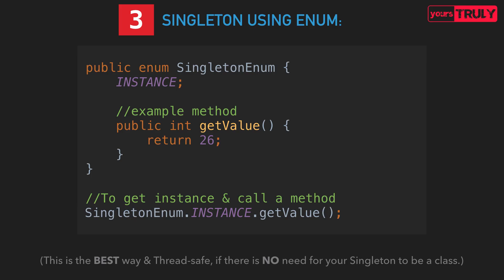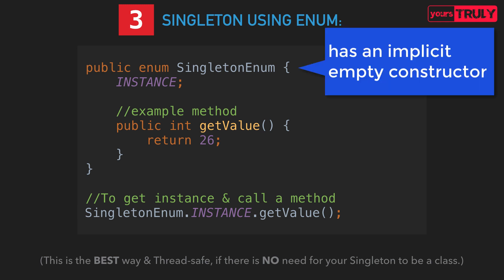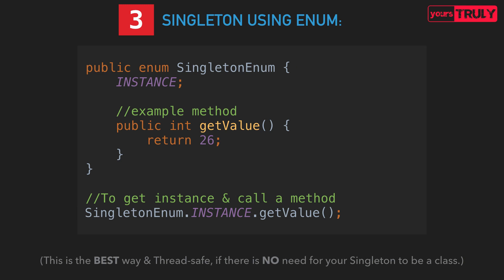Now let's look at the third and final way of creating singletons — using enum. Here we declare an instance of type SingletonEnum, and to access it from anywhere in your application you write SingletonEnum.instance.getValue(). Enums don't need an explicit constructor because they have a default constructor that gets instantiated the very first time the enum is used. You can use this enum approach only when your application doesn't require the singleton to be a class.